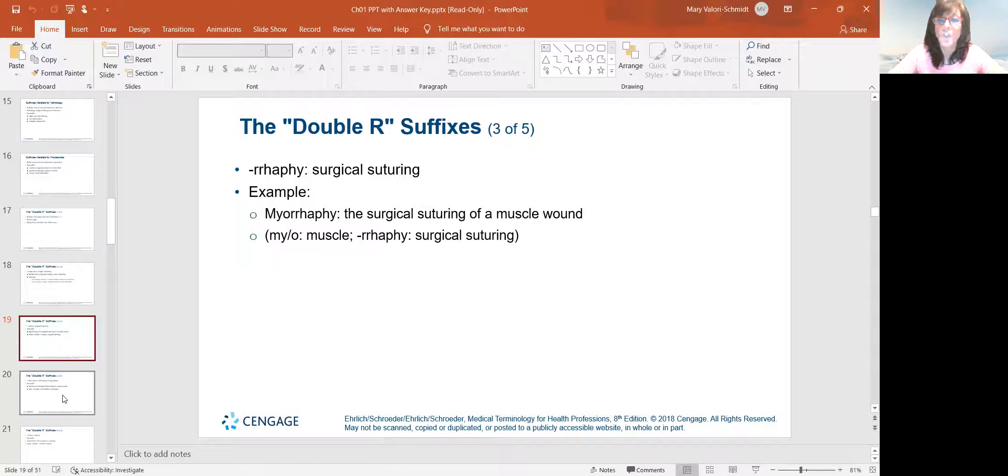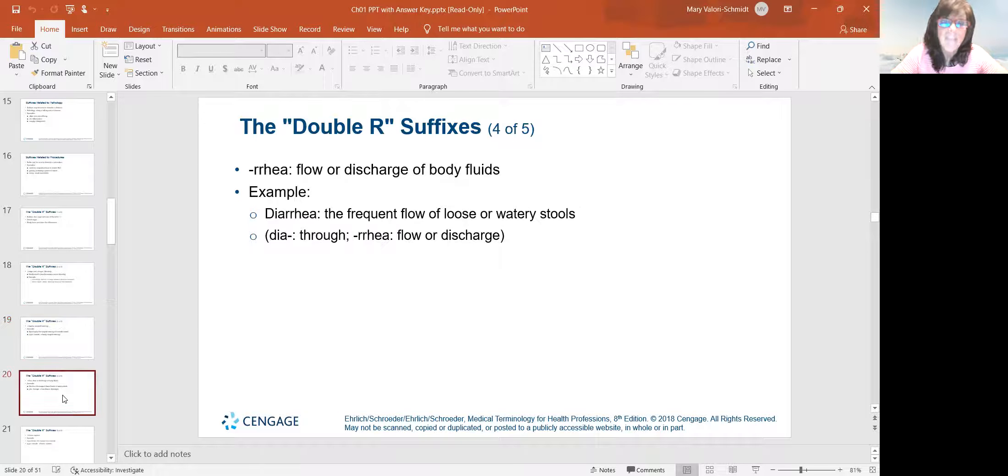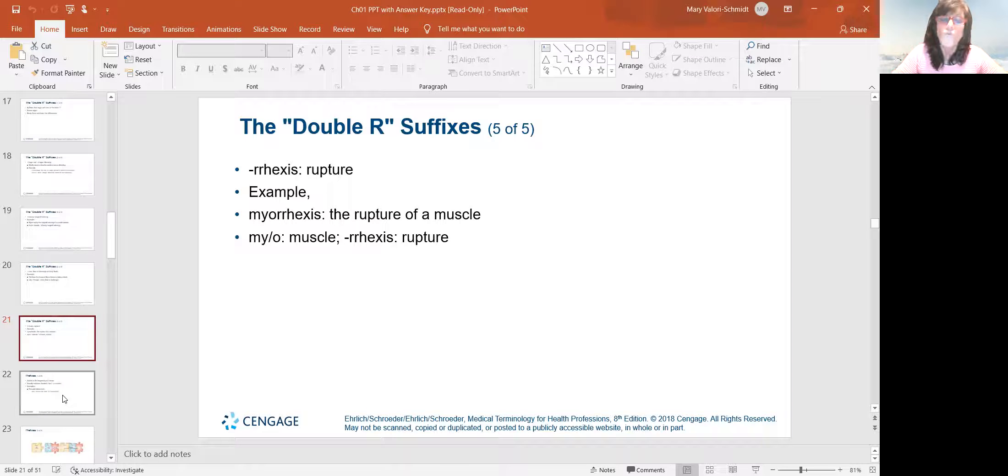And rrhaphy is surgical suturing, sewing up a wound. Myorrhaphy is the surgical suturing of a muscular wound. And then rrhea, everybody knows rrhea, is the flow or discharge of body fluids, like diarrhea, frequent flow of loose watery stools. Steatorrhea is fatty, frequent loose watery stools. So that's what rrhea is. Rrhexis means rupture. Myorrhexis is rupture of a muscle.